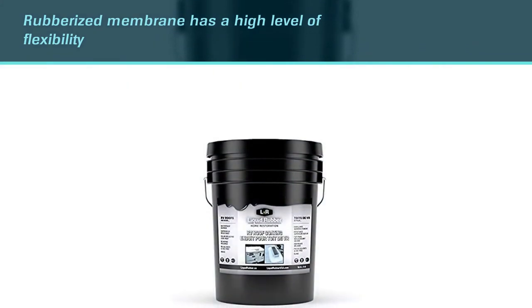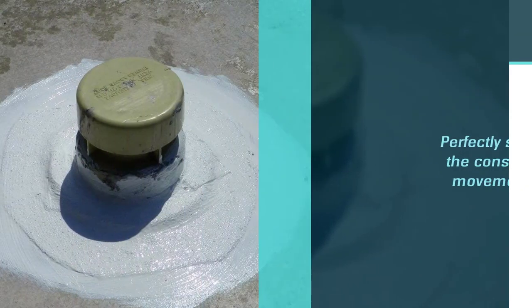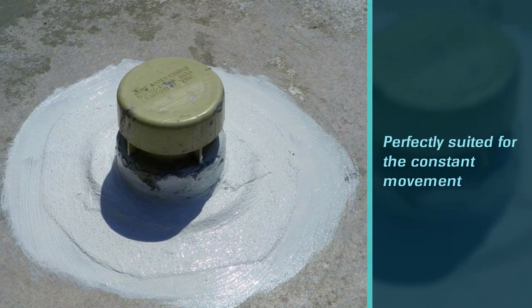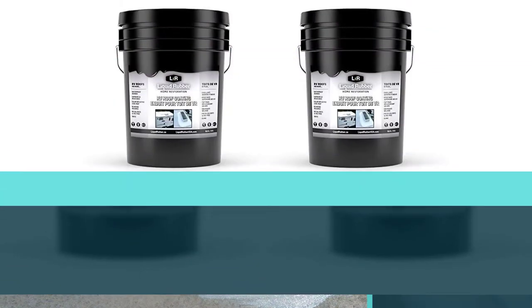The rubberized membrane has a high level of flexibility, making it perfectly suited for the constant movement of an RV. One five-gallon container is enough to provide two to three coats on the roof of an RV that's up to 30 feet long.